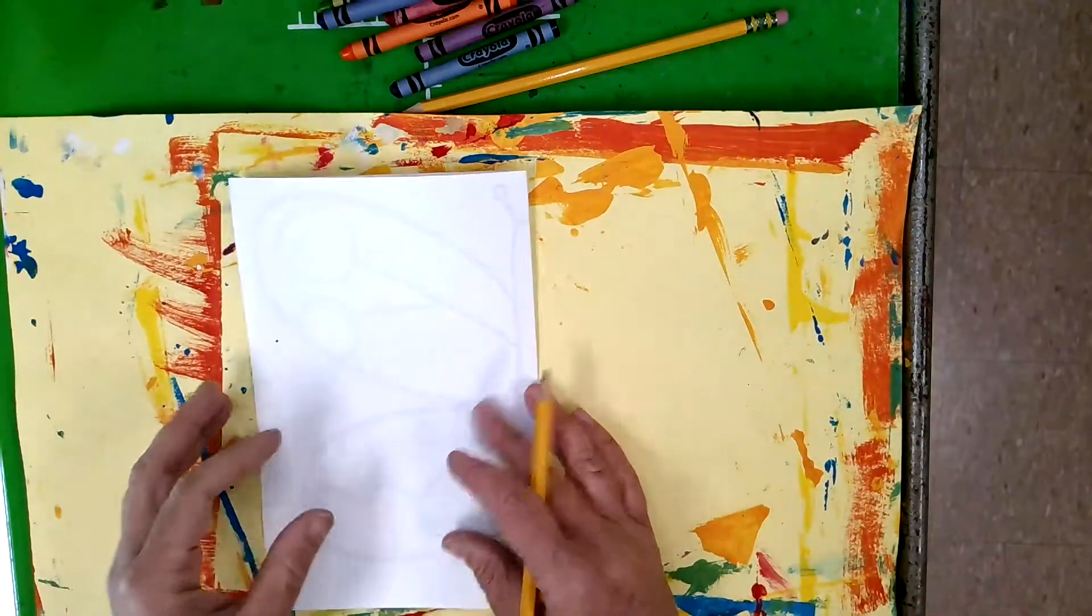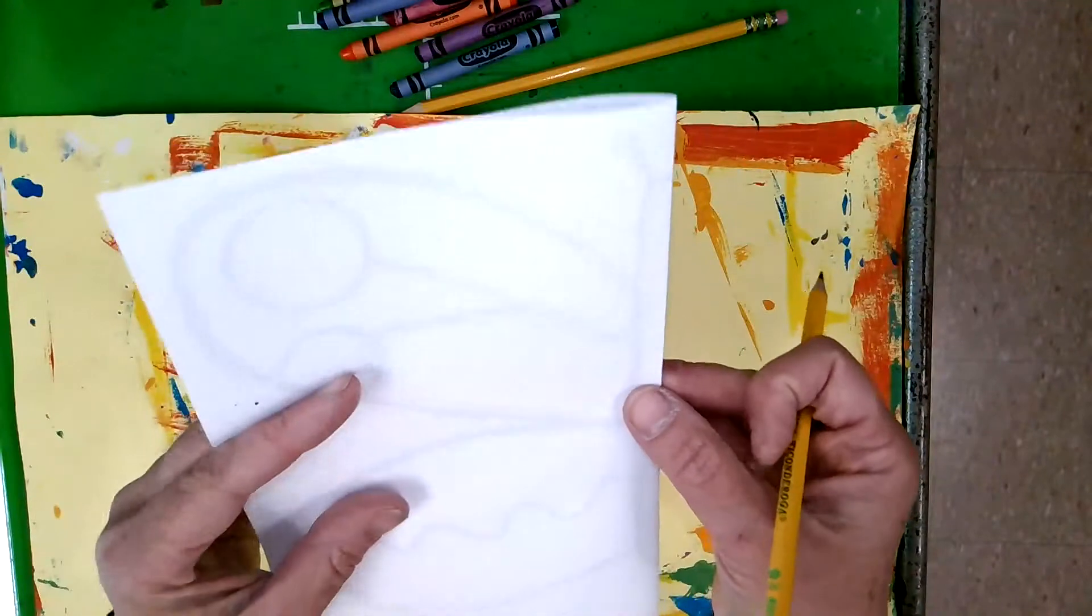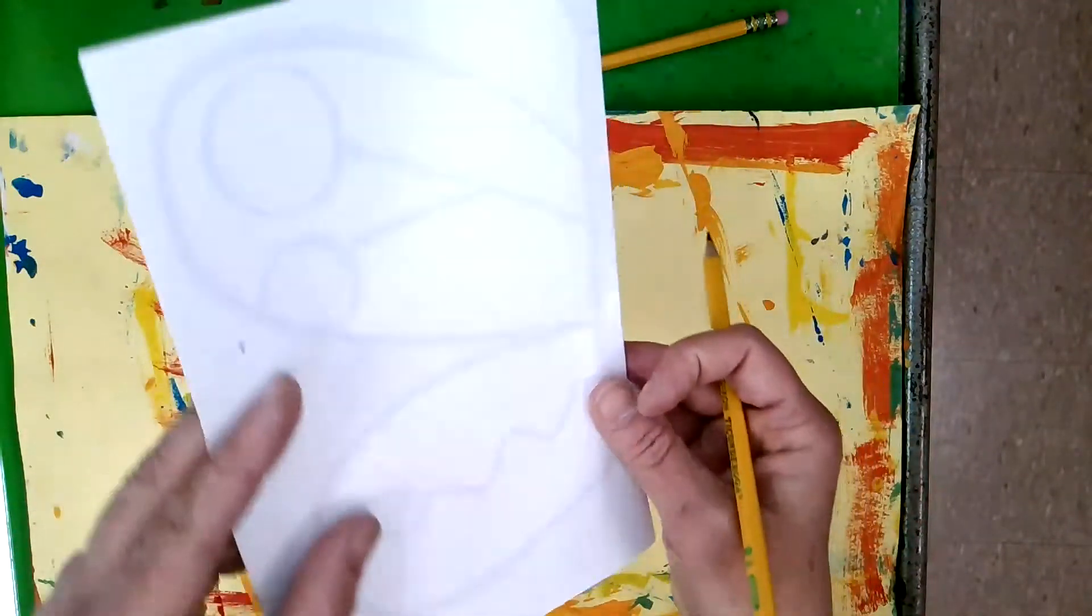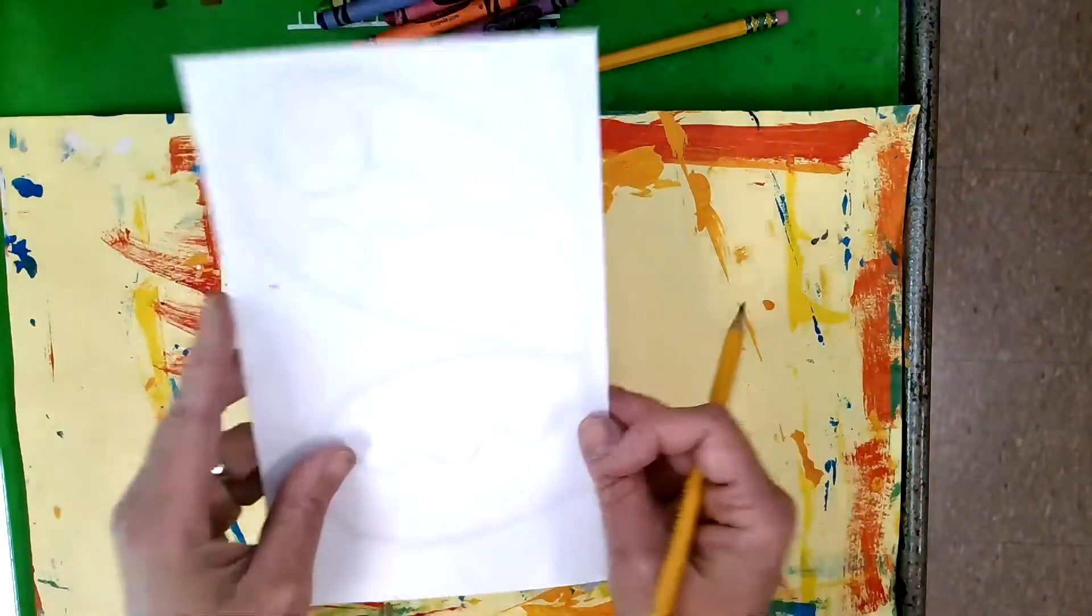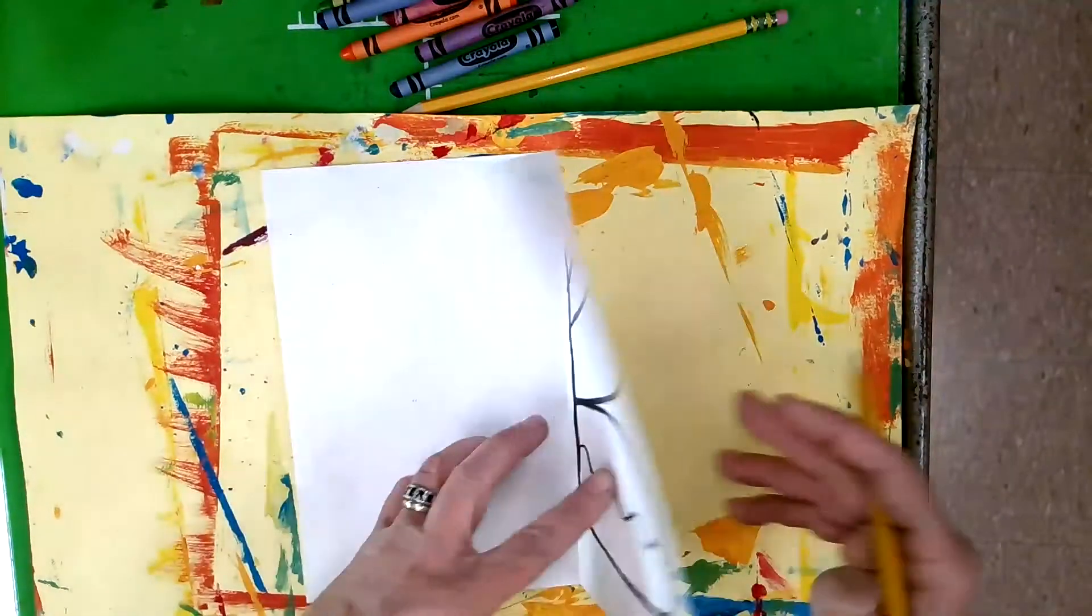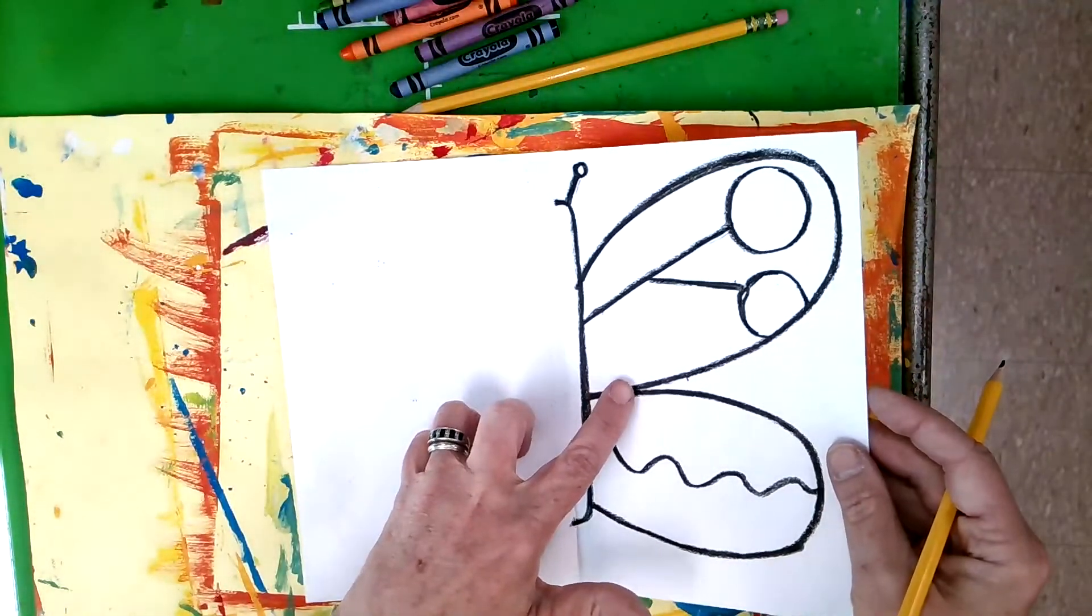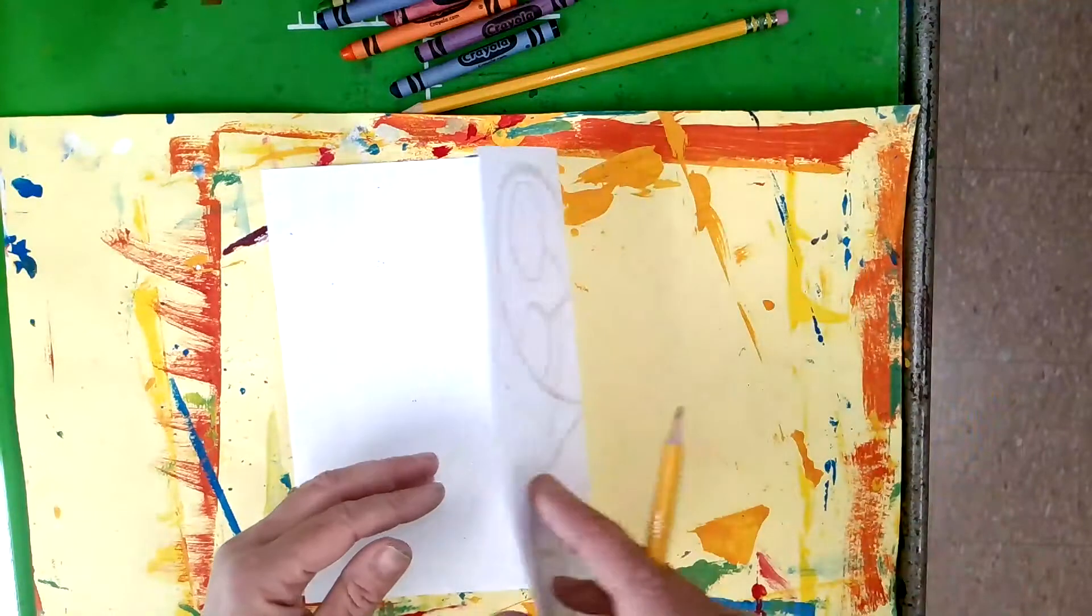Alright, I'm going to close this up. I can see the black lines through my paper. I want to be looking at the back of this artwork. The back of it.